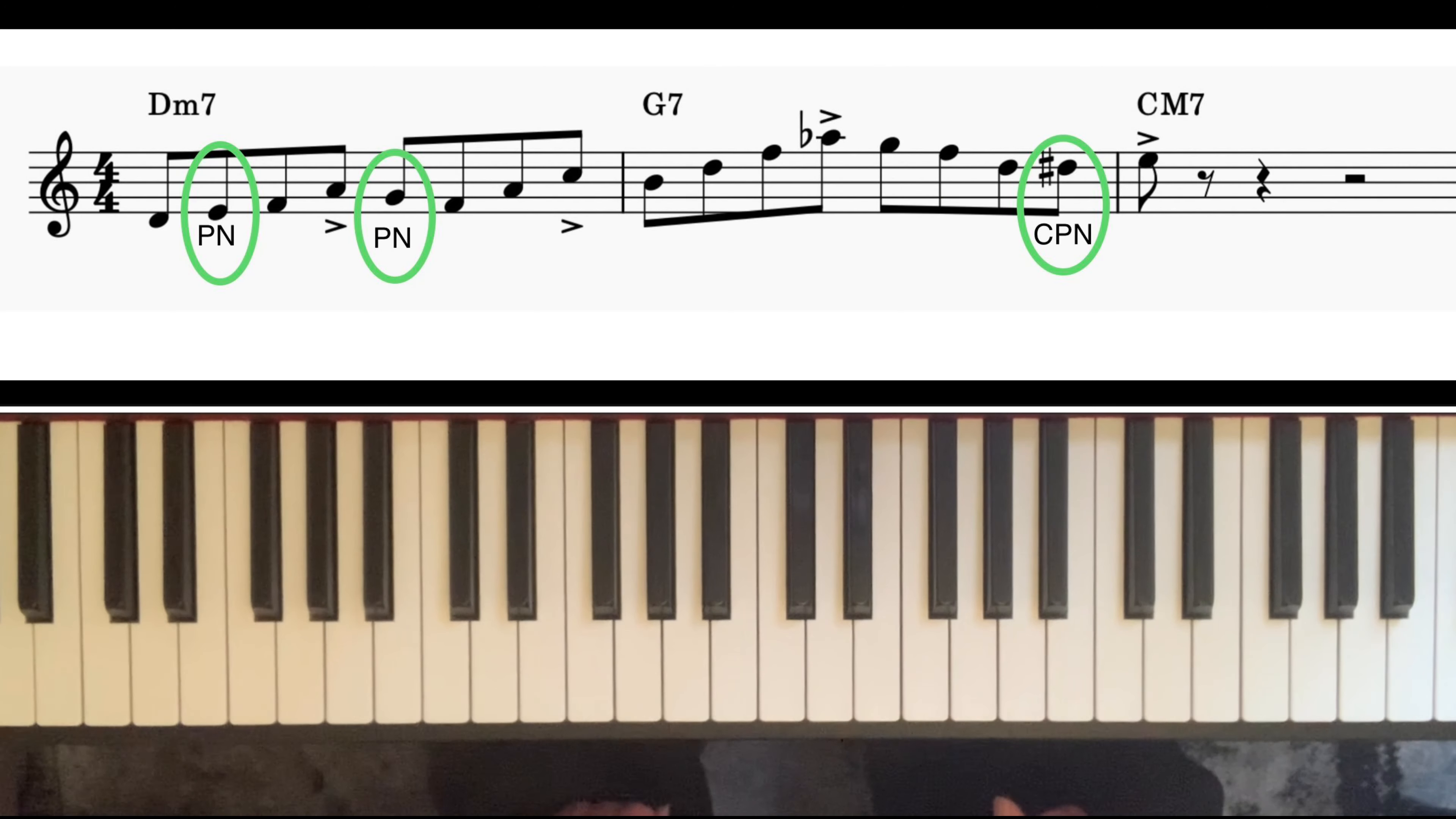Over the D minor 7 chord, I simply outlined the chord notes but I included a couple of what we call diatonic passing notes. Diatonic means that the notes belong to the key that you're in, and passing notes are non-chord notes that come in between two chord notes a third apart.